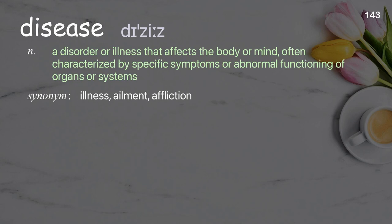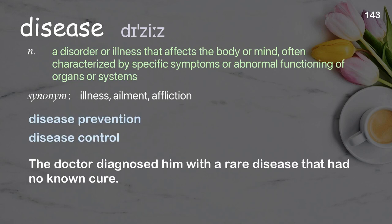Disease. A disorder or illness that affects the body or mind, often characterized by specific symptoms or abnormal functioning of organs or systems. Examples: disease prevention, disease control. The doctor diagnosed him with a rare disease that had no known cure.